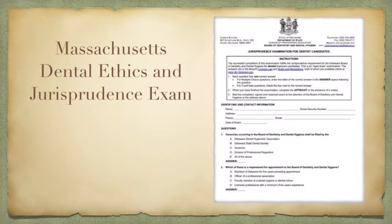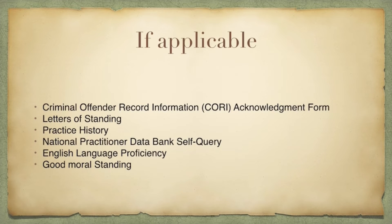After filling out the application form — which I will be attaching in the description box — you may need to send additional documentation. This includes a Criminal Offender Record Information (CORI) acknowledgement form, which is attached along with your application form. This is applicable if you answered yes to any of the questions in the good moral character section of the application form.